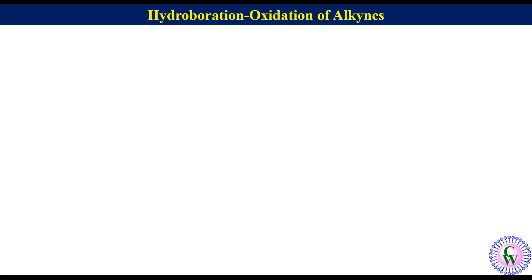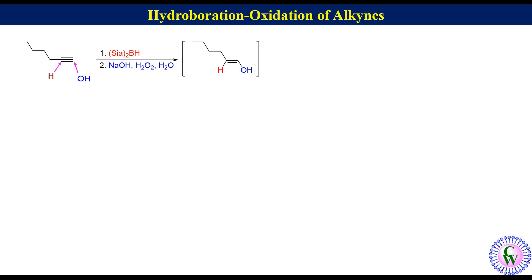Now we will take examples of hydroboration oxidation of terminal alkynes. Hydroboration oxidation of hex-1-yne: H selectively adds to the internal alkyne carbon while OH goes to the terminal alkyne carbon to produce hex-1-en-1-ol, which tautomerizes to the more stable keto form, hexanal.